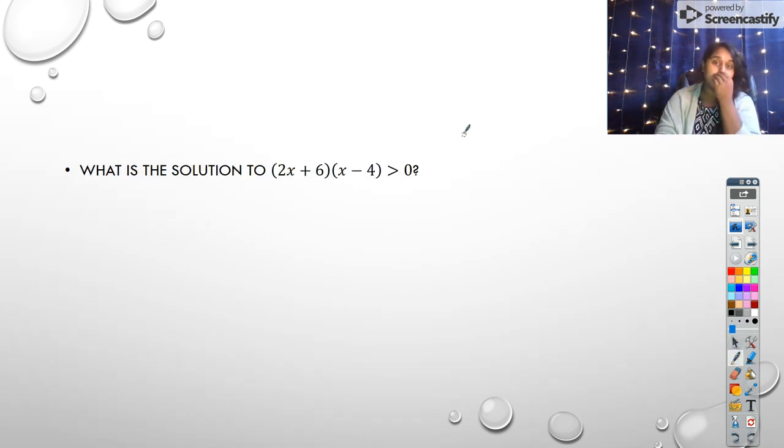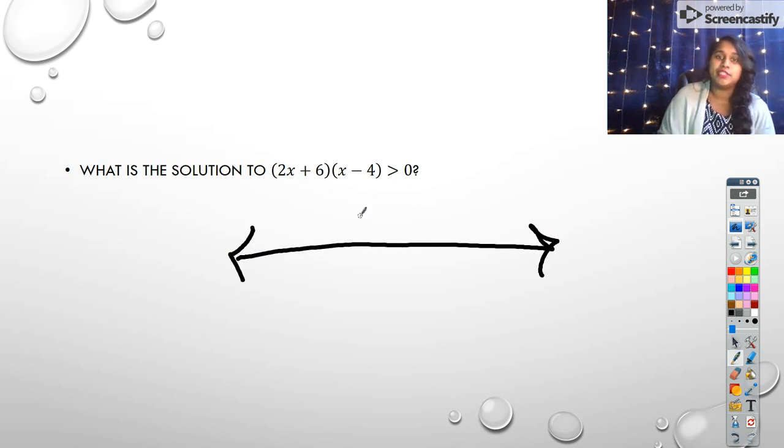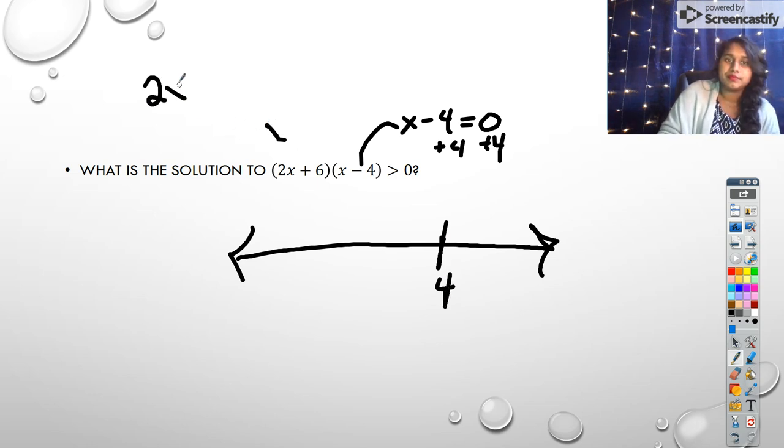So what is this solution? So again, when we solve polynomial inequalities, it's the same as solving a polynomial, except once we get to our factored form, we have to create a sign chart. And so my sign chart gets my roots. My root here, x minus four equals zero becomes positive four. So I'm going to put a positive four. My root here,